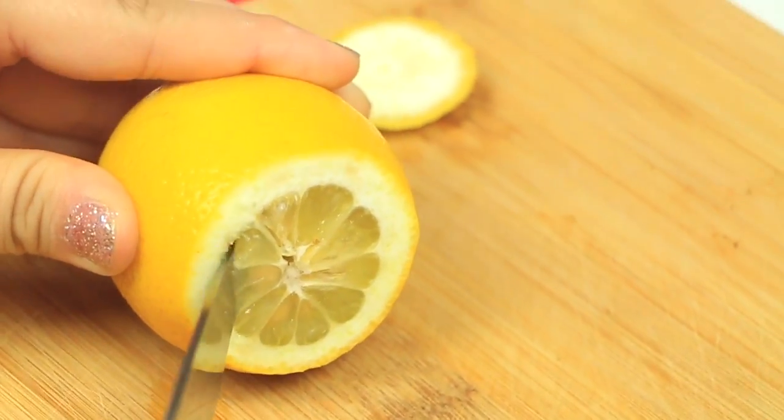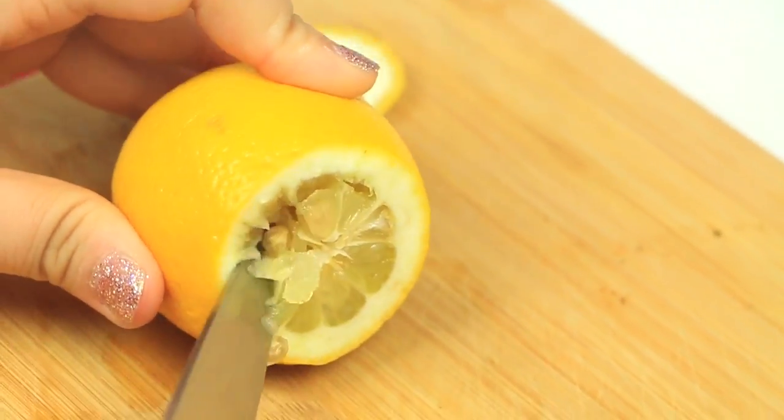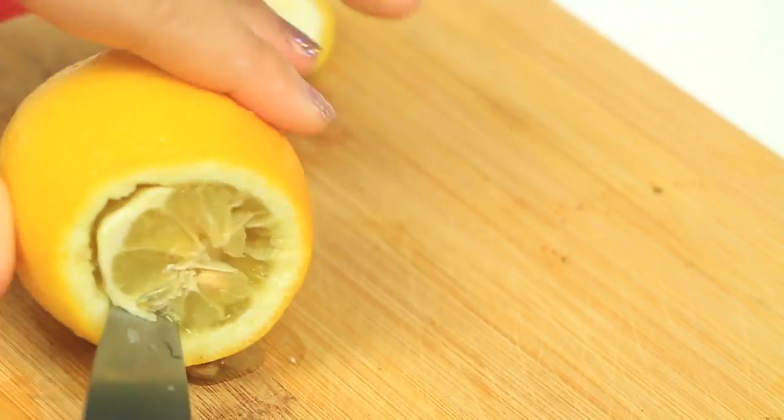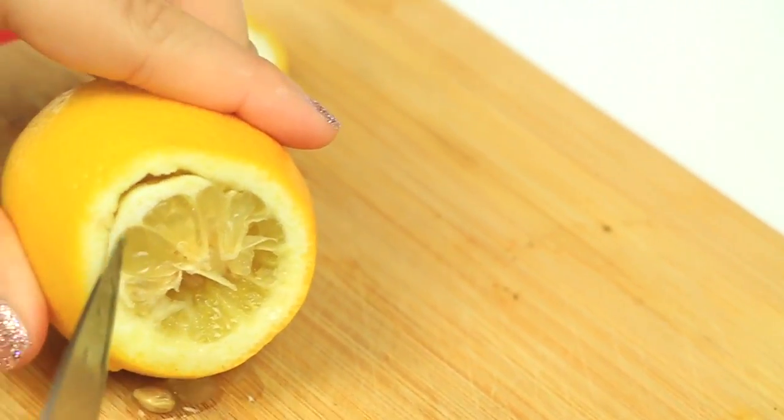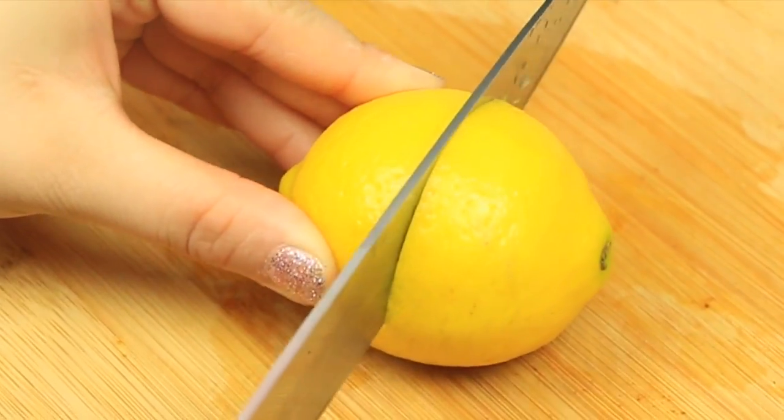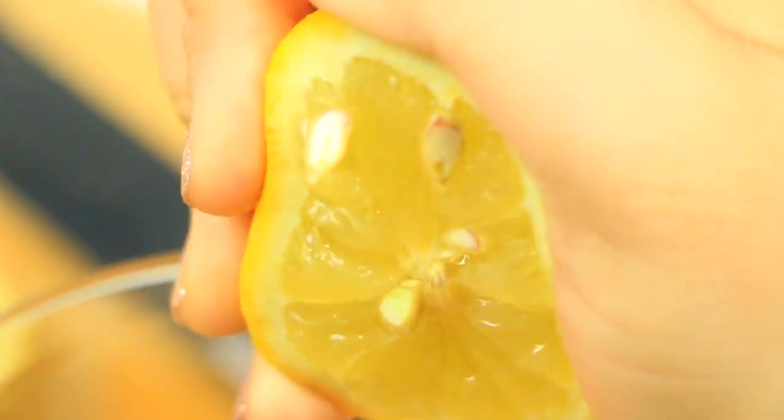Then I'm taking a knife and I'm going to carve out some of the lemon, the inside of the lemon. I'm not going to take out too much, maybe just like halfway. So put that aside and we're going to go on to the other lemon. Cut it in half and we're just going to pour all the juice into a container.